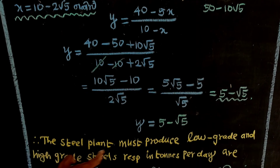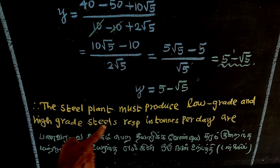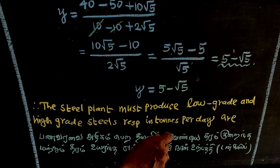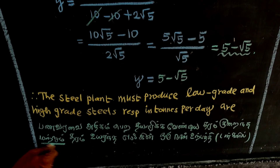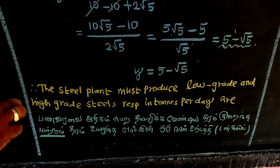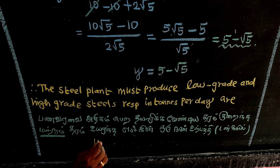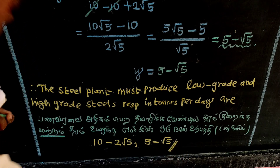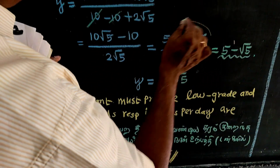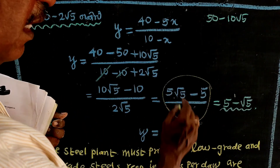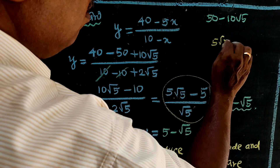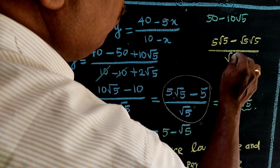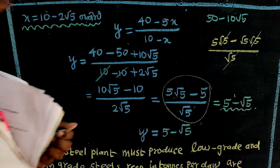Therefore, the steel plant must produce low grade steel and high grade steel respectively. The optimal production is x equals 10 minus 2√5 tons per day of low grade steel and y equals 5 minus √5 tons per day of high grade steel to achieve maximum receipts.